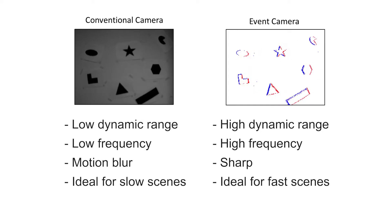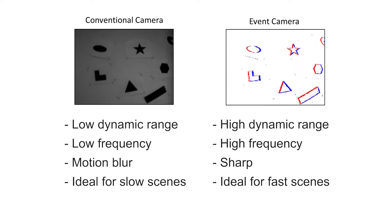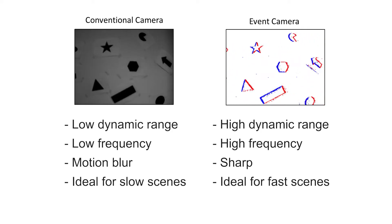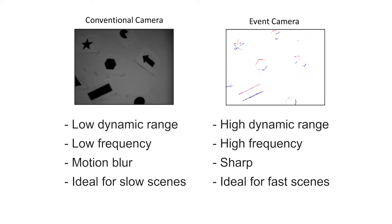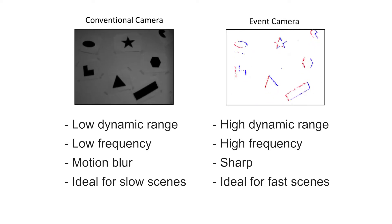Conventional cameras are relatively low dynamic range, low frequency frame rate, easily motion blurred in the presence of fast motion, but ideal for capturing slow or static scenes. Event cameras are high dynamic range, high frequency, not easily motion blurred, and ideal for capturing fast motions, though poor at capturing very slow and static scenes.